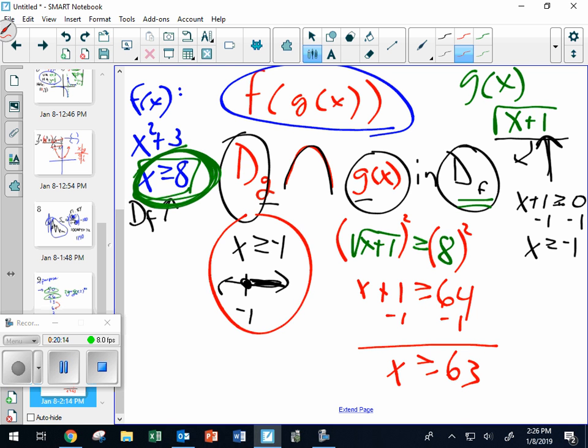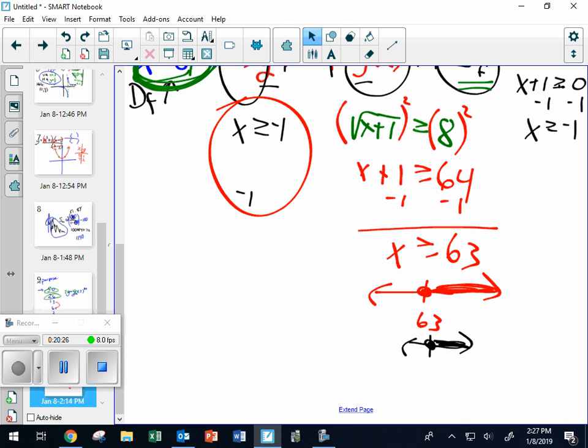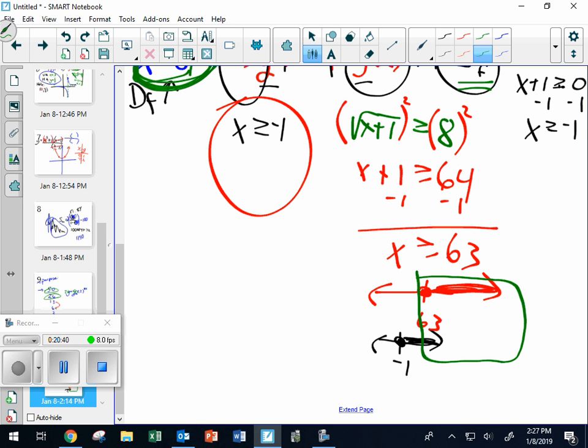And how do I put that with this? I like to do with two number lines. I'll make a number line. How do I put these two number lines together? I like to go like this and see where they overlap. And where do they overlap from here over? Final answer. X is greater than or equal to 63.